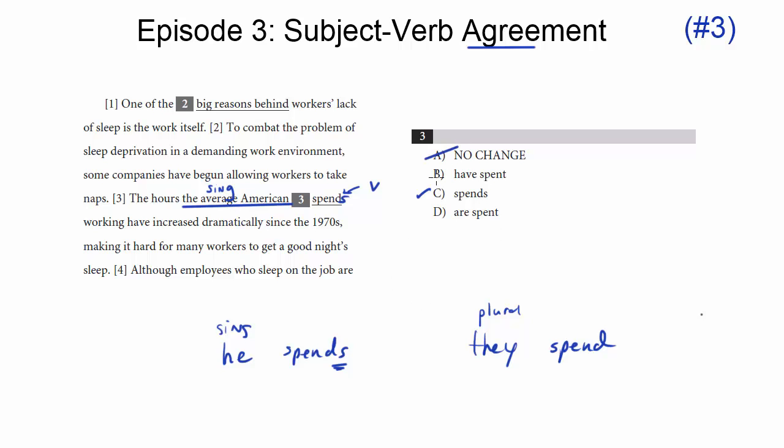Now B and D change the tense a little bit. They go to have spent or are spent. But we don't really care about the tense with B and D, or at least with B as a tense. D is a different kind of change. We don't really care about the change in the form of the verb because both of them are still plural. So we actually don't even have to worry about whether it should be have spent or spend or anything like that because they're both plural.